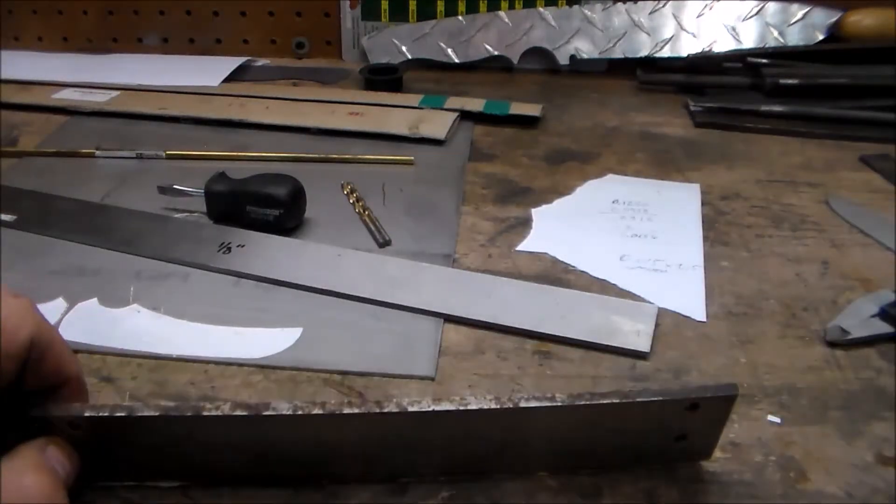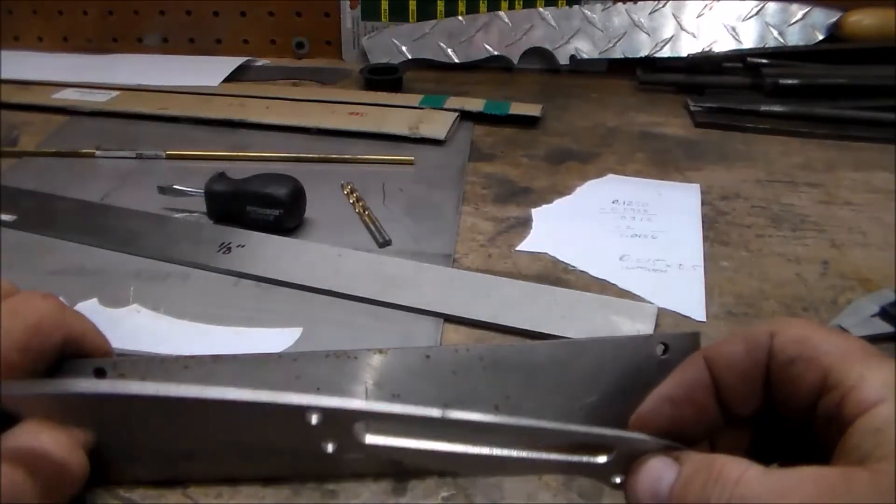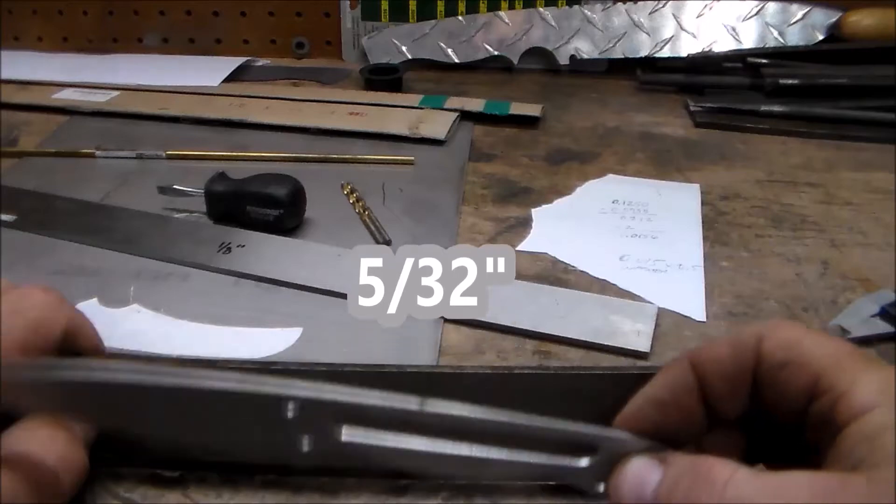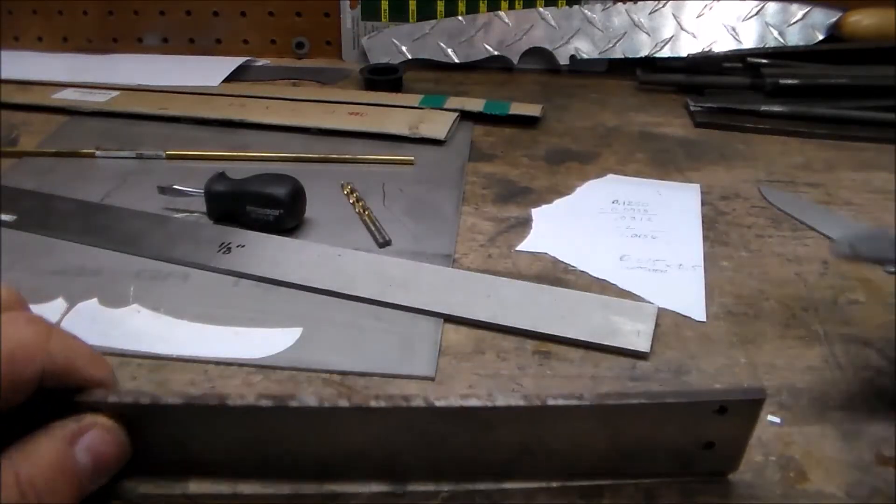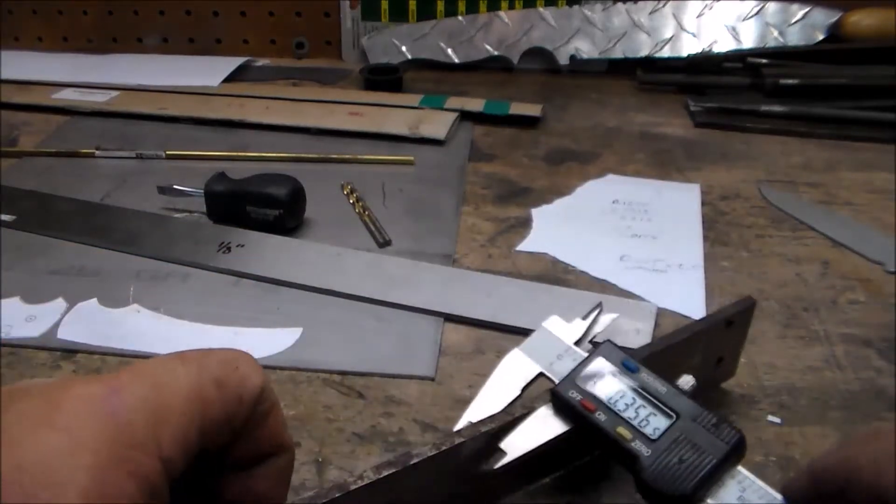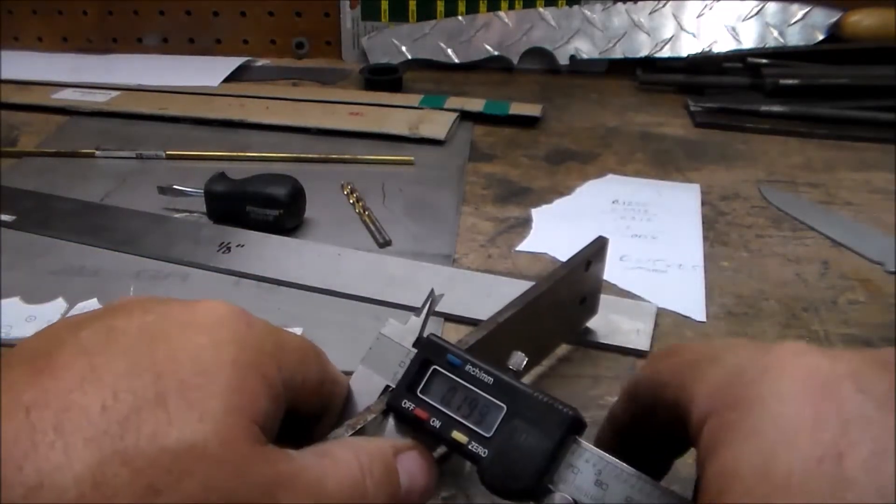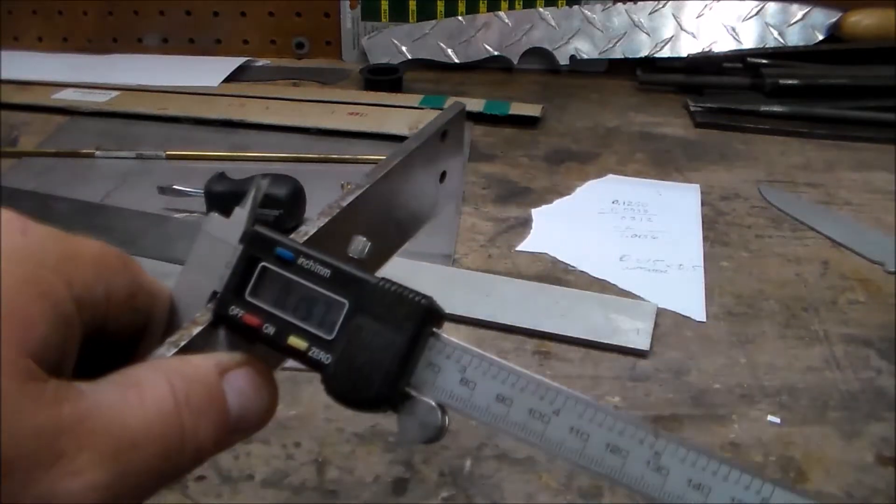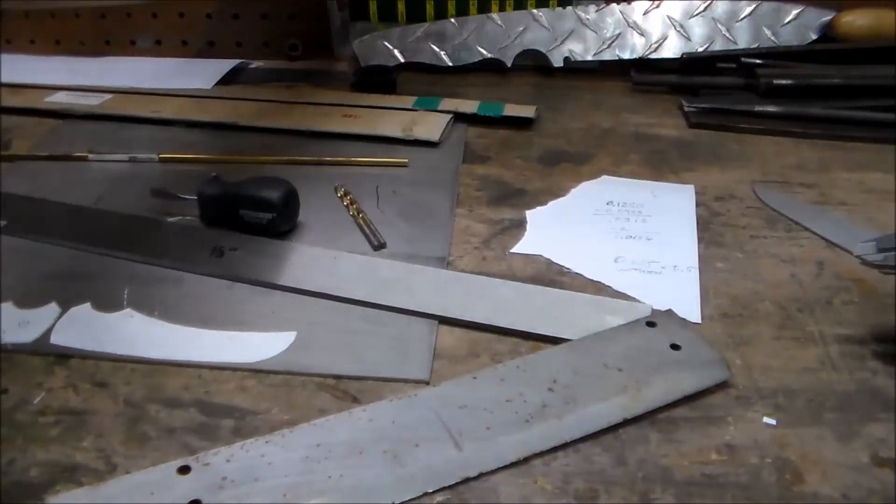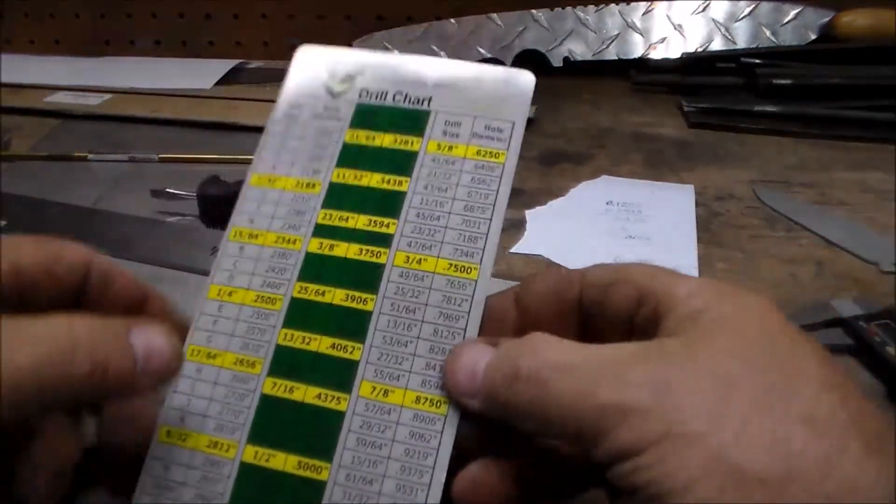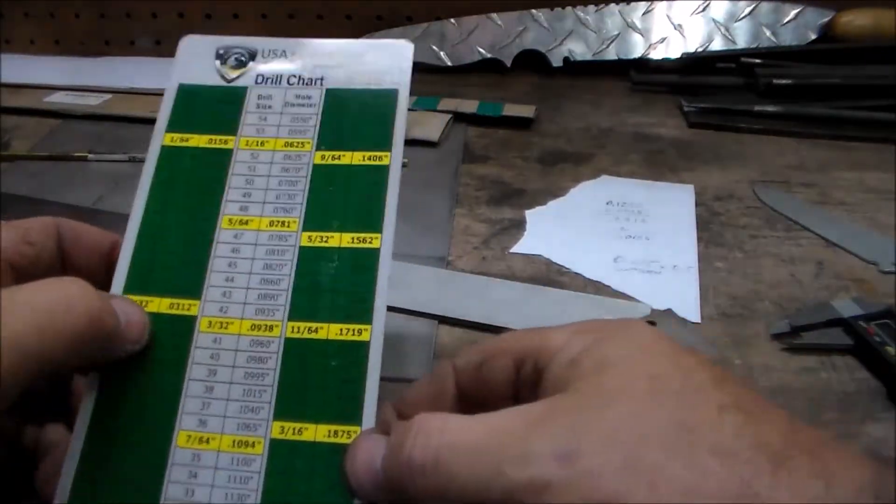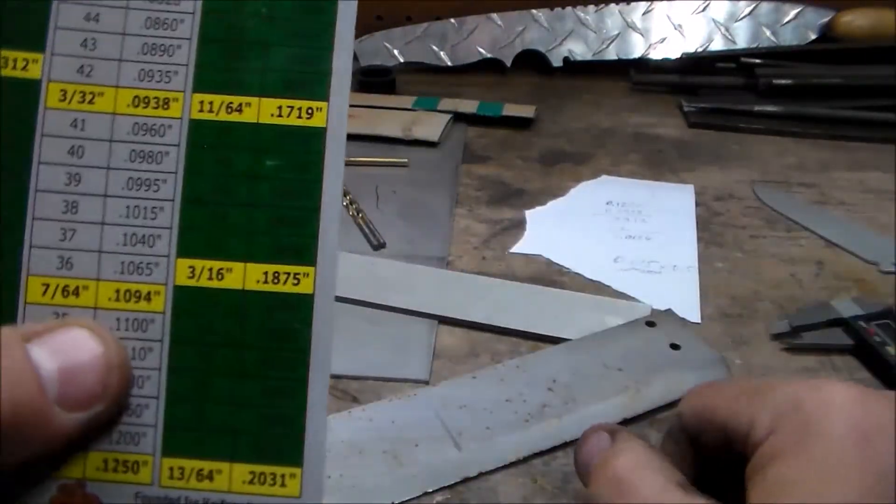Now, this is normally thicker. I normally make this pattern out of eighth inch and one step up from that maybe. But this planer blade comes in at a .197. That's a tad bigger than 3/16ths.